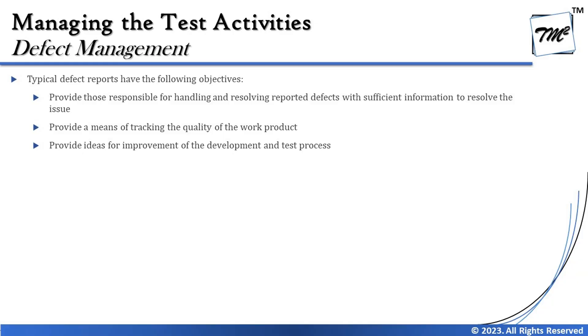The second objective is to provide a means of tracking the quality of the work product. Work products — both those we use and those we test — can be evaluated from the defect report. For example, looking at our own test cases, I can judge which test cases result in good defect identification and which don't, helping me select regression test suite candidates and write better test cases for future projects. On the other hand, if I find many defects related to code, I know unit testing was poor and development needs to improve.